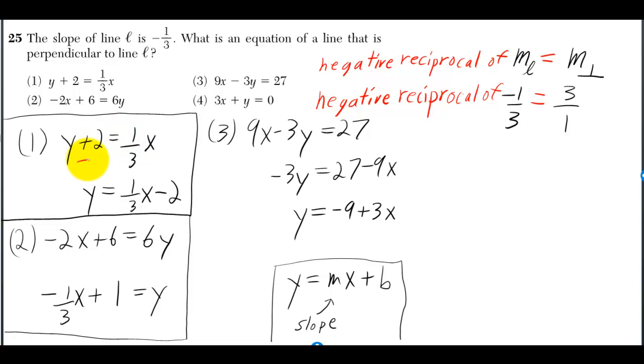To solve number 1 for y, we just have to subtract 2 from both sides. You get 1 over 3 in front of the x, so your slope is 1 over 3. But we want 3 over 1.